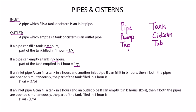If an inlet pipe A can fill a tank in A hours and another inlet pipe B can fill it in B hours, if both the pipes are opened simultaneously, the part of the tank filled would be the sum of the two since both are inlet pipes.